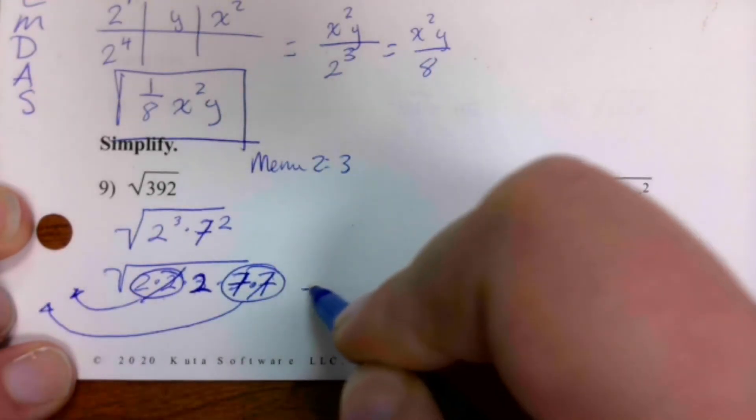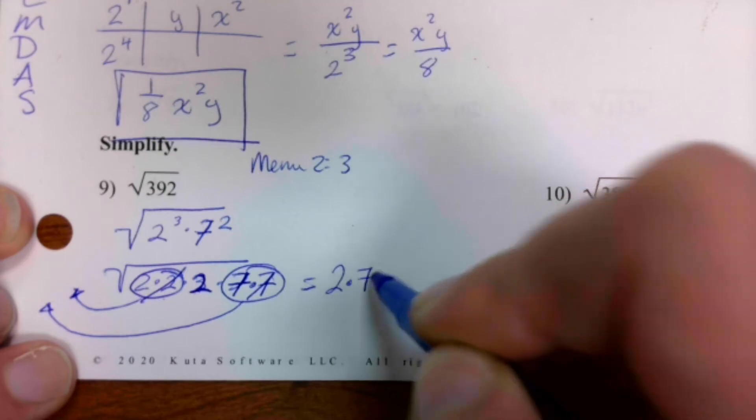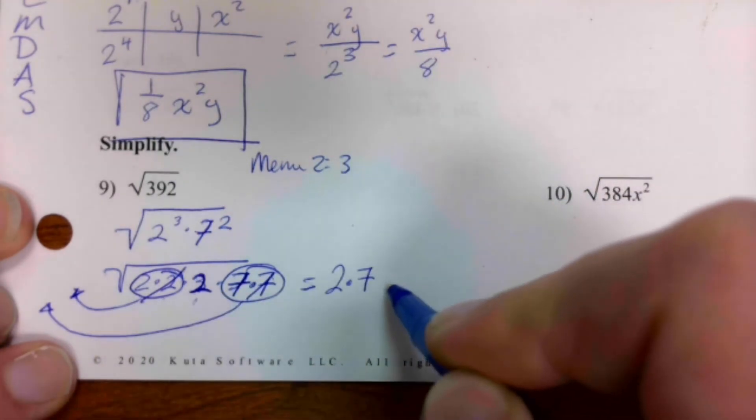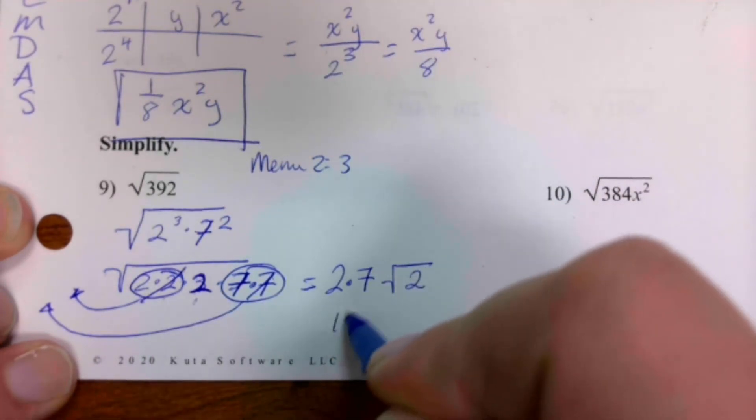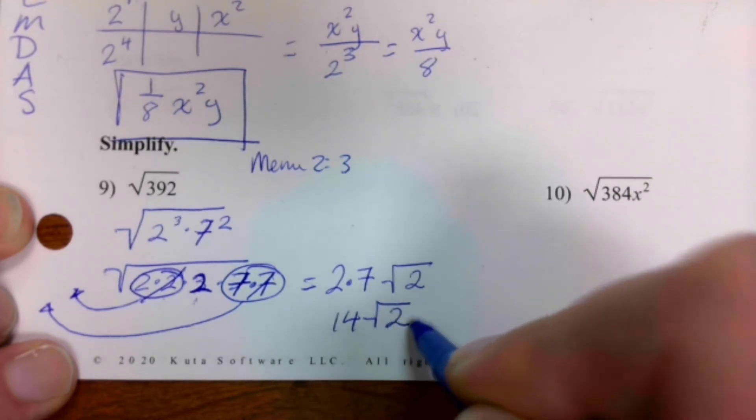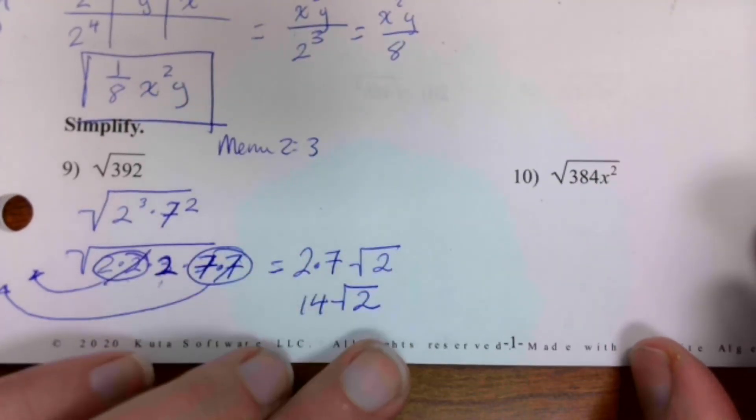So I'm going to have two times seven on the outside, and this one doesn't have a friend so he's stuck on the inside. That's it on this one.